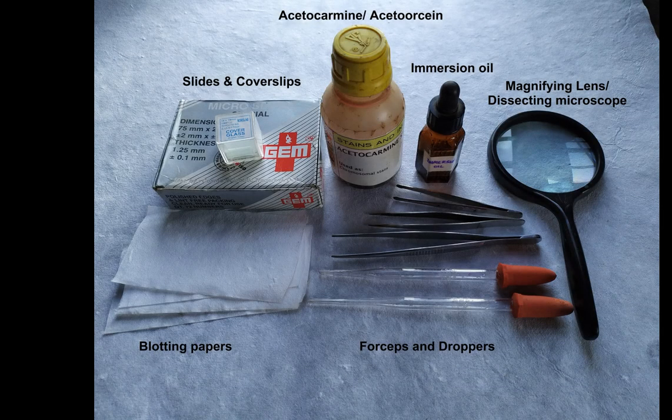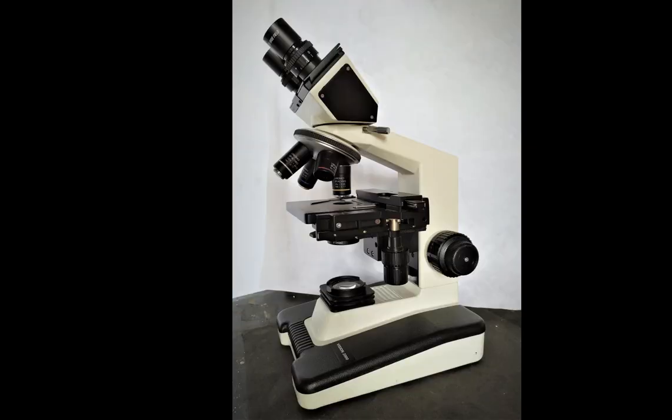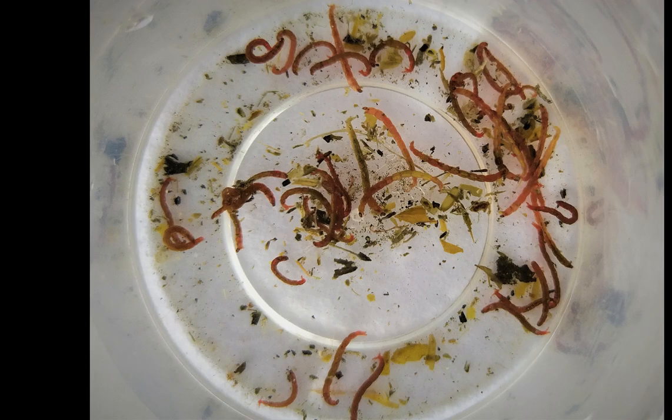For this experiment, we'll need Acidocarmin or Acidoorcein stain, immersion oil, tweezers, pins, droppers, glass slides and coverslip, a magnifying lens or a simple dissecting microscope, some blotting papers, a compound light microscope, and Chironomous larvae collected fresh.